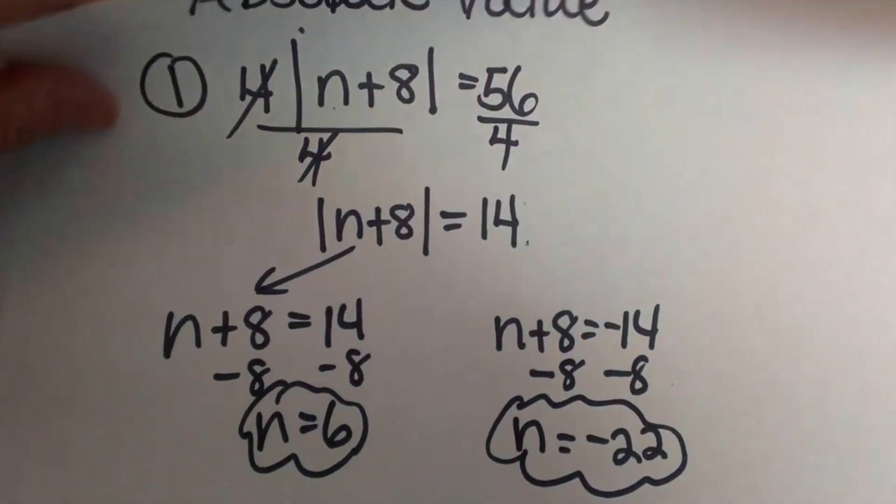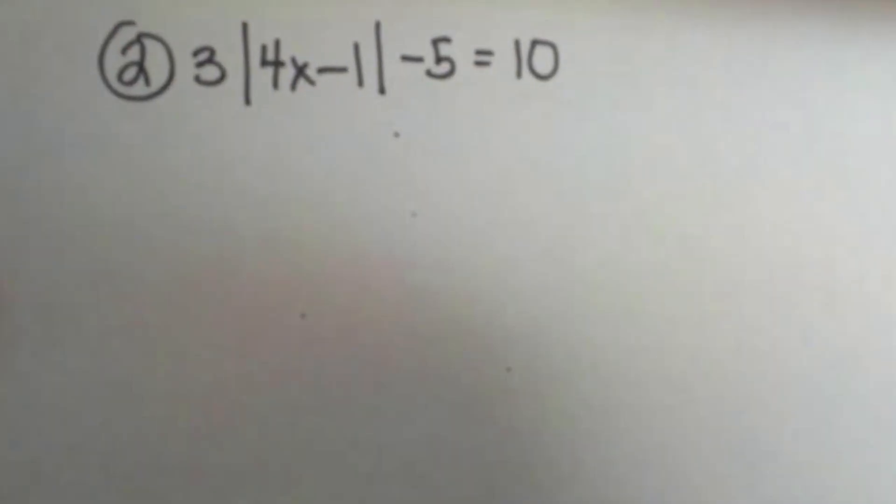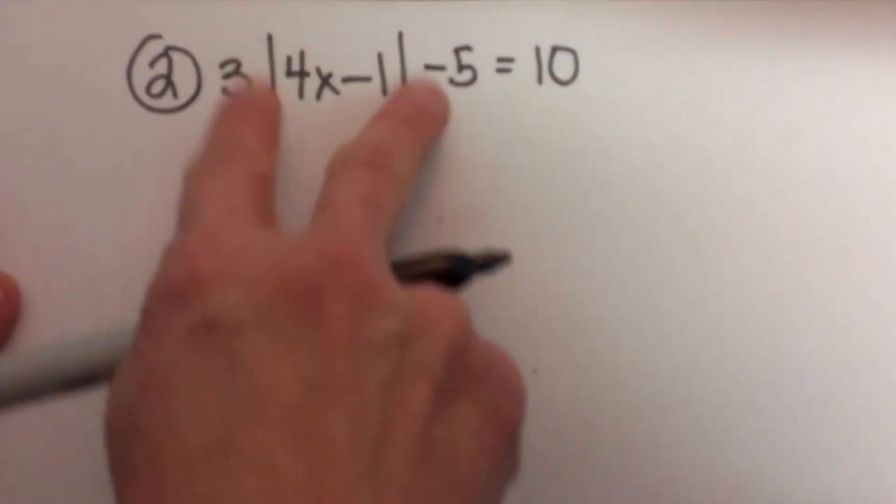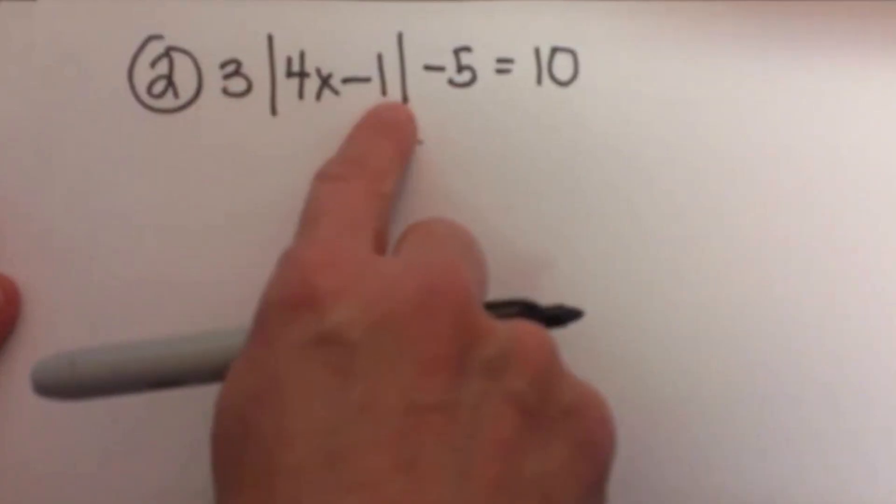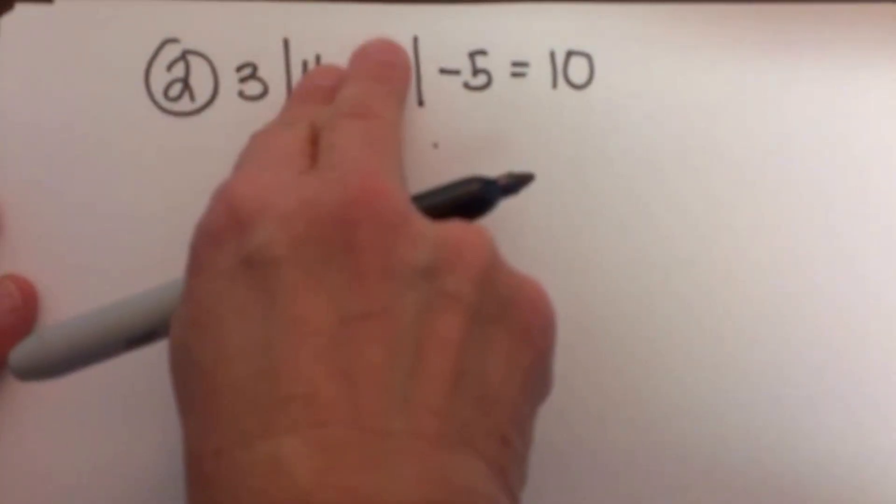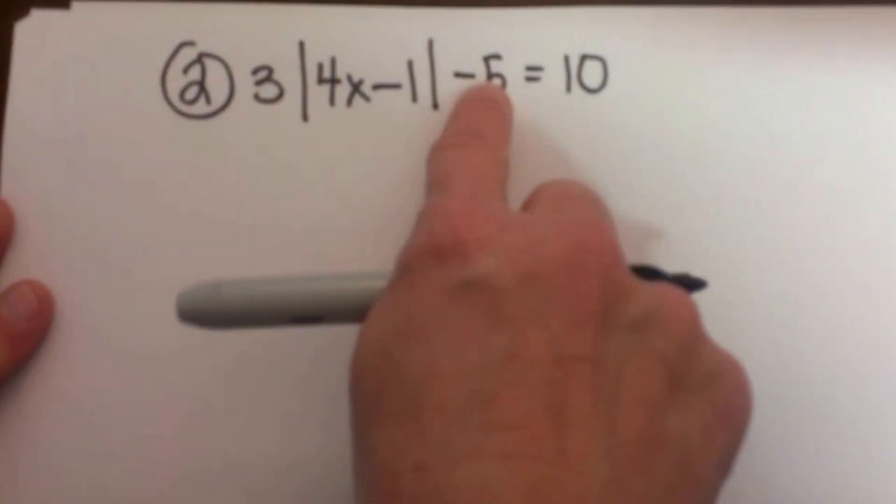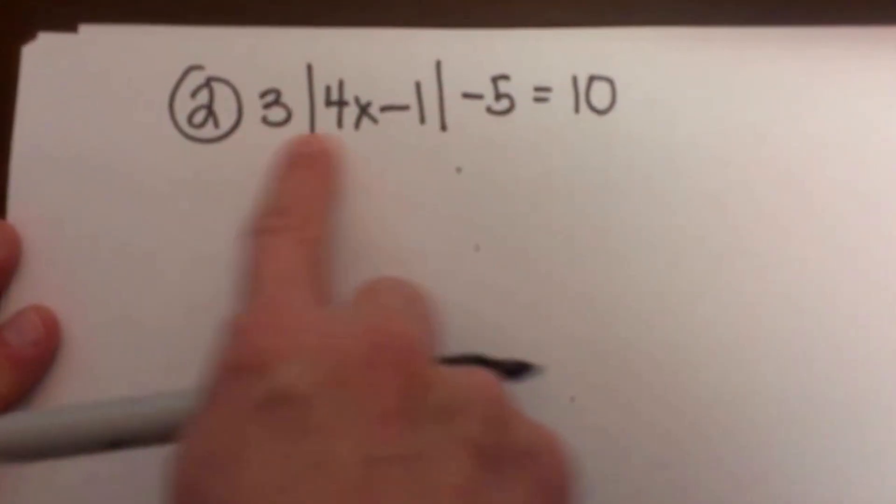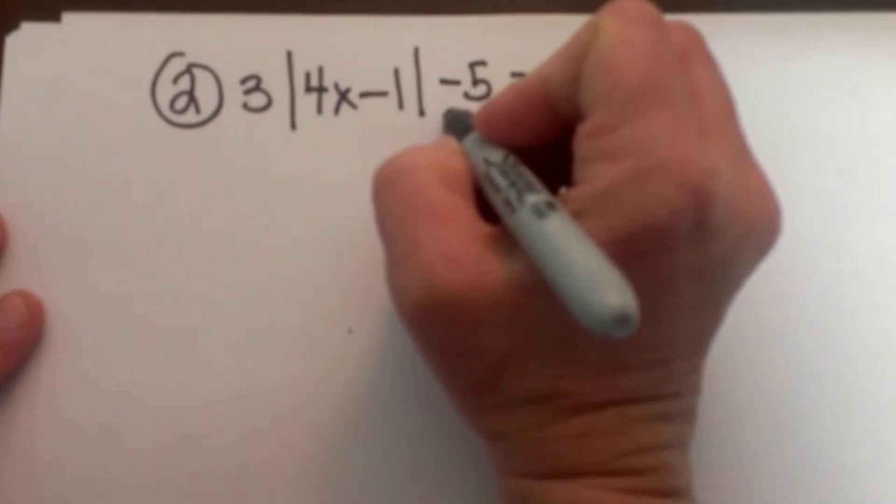So let's look at a second equation. This one is a little more involved because we have more stuff over here with our absolute value. Just like a basic equation, think of this as just 3x equals 5. Well, if you were to solve that, you would just add 5 to both sides and then you would divide by 3. We are going to do the same thing with the absolute value.